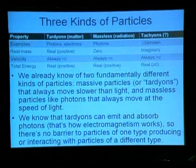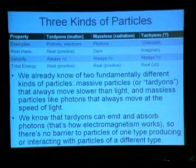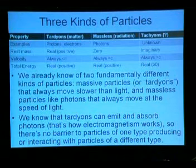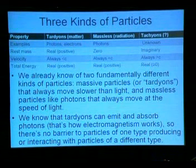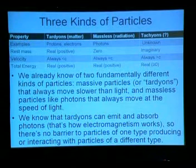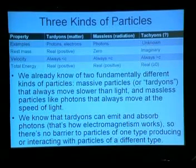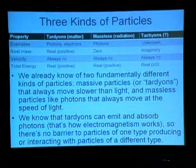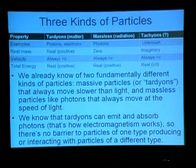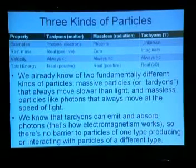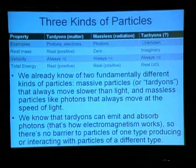Fundamentally, you get three kinds of particles. We're made of particles sometimes called tardions — we know they exist. We interact with massless particles all the time, so we know there's no barrier to interactions between two different kinds of particles on this chart. Tachyons, if they exist, would simply add another category covering the remaining velocity regime: always slower than light, always moving at the speed of light, always moving faster than light — and all of them have real total energy.